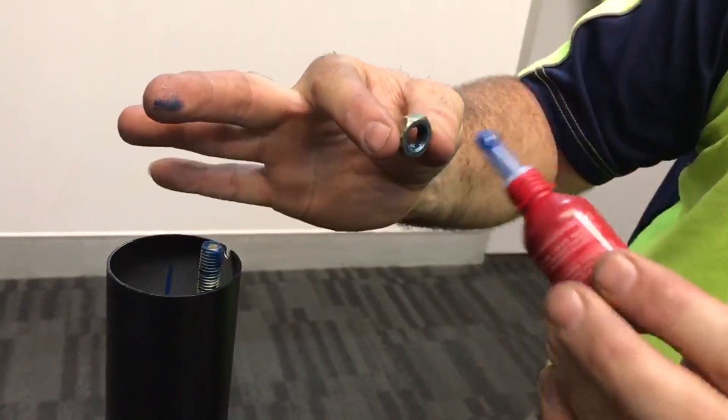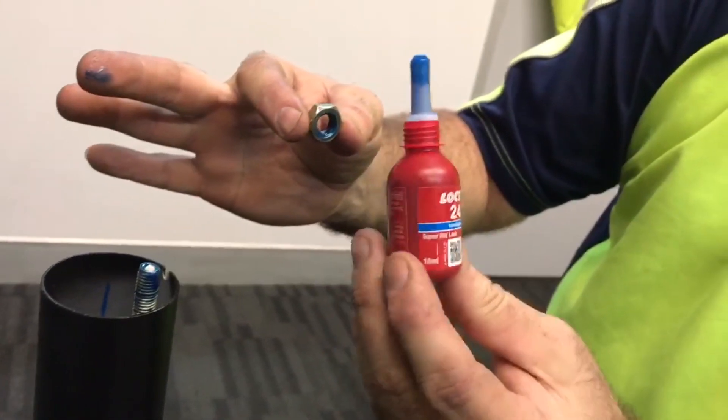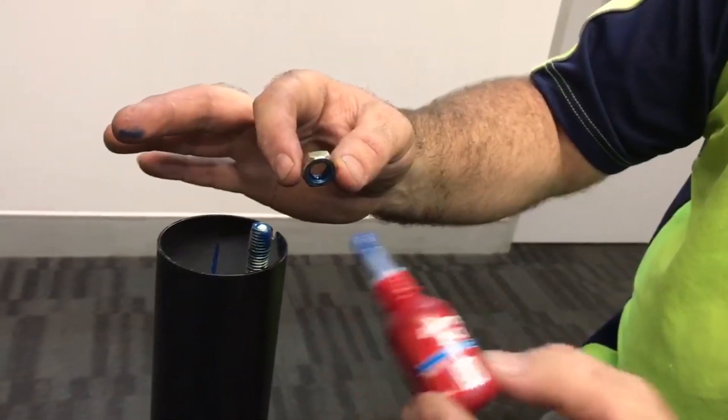Basically, you put a bit of Loctite inside the nut. This is Loctite medium strength. When you want to undo this, you can pull it apart, and then I put it on the rod.